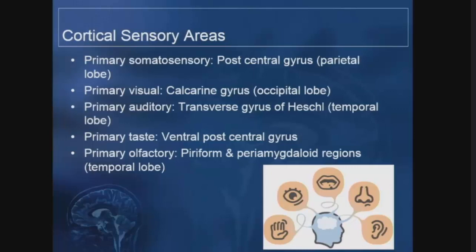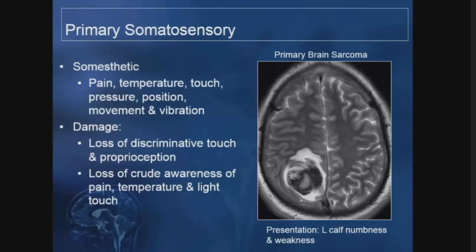Moving on to cortical sensory areas: the primary somatosensory cortex is on the postcentral gyrus and handles sensations of touch, pressure, vibration, and temperature. Here is a patient who had a primary brain sarcoma in the anterior aspect of the parietal lobe also involving the frontal lobe, presenting with numbness and weakness in the left calf. Damage to this area causes loss of touch, proprioception, temperature sensation, and pain.